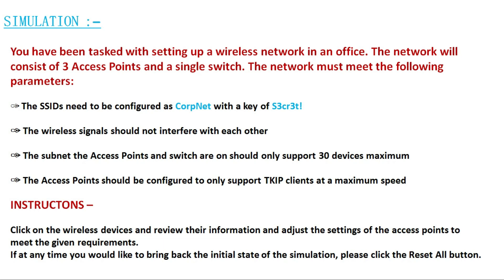You have been tasked with setting up a wireless network in an office. The network will consist of three access points and a single switch. The network must meet the following parameters: the SSIDs need to be configured as 'copnet' with the key S3CR3T. The wireless signals should not interfere with each other. The subnet, access points, and switch should only support three devices maximum. The access points should be configured to only support TKIP clients at maximum speed.